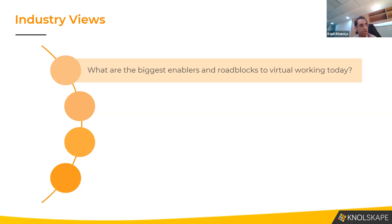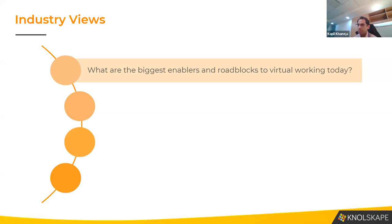The second important enabler is the mindset of the organization and the mindset of people. A lot of organizations let people work from home virtually but don't trust them, because there's still this underlying connotation that work from home is not really work. That mindset has to change. You can't take the easy option of enabling it only for individual contributors — you have to figure out a way of enabling it for everyone, and then decide whether it really works or not.